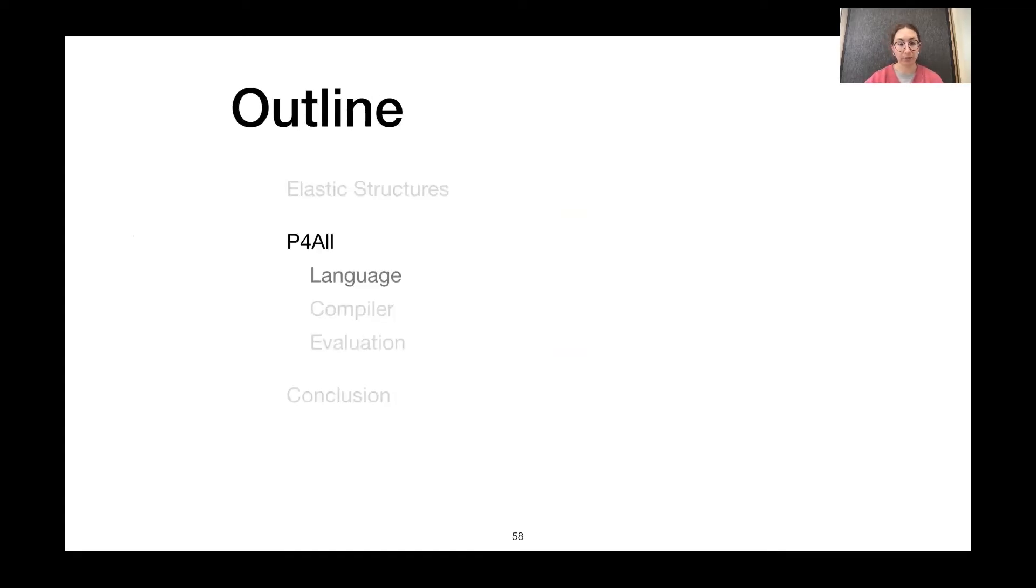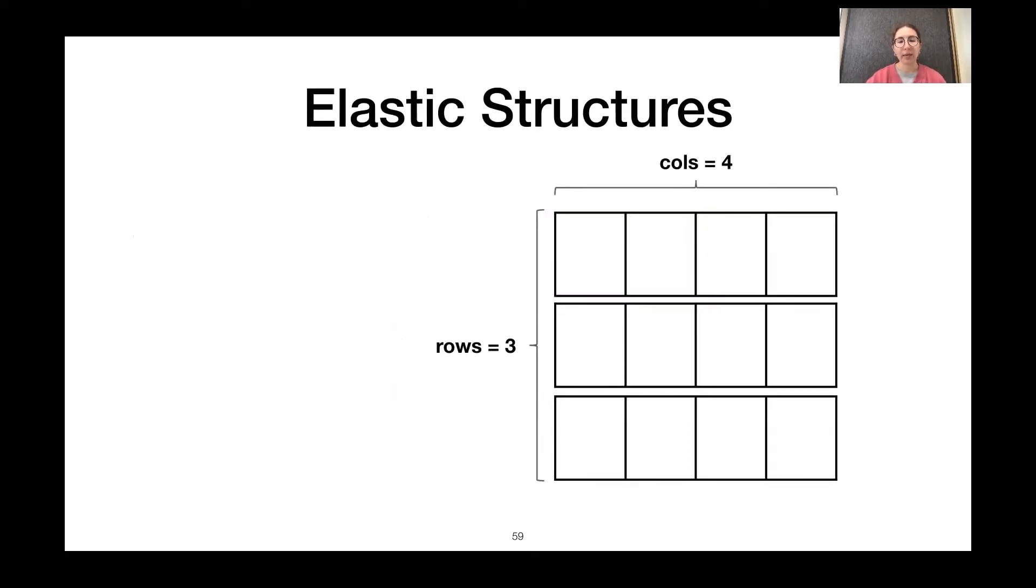So, how do we actually express these elastic data structures? So, we can't express them in the way that P4 currently exists. So, in P4, if we want to write a count sketch, we explicitly state we want three rows in our sketch, which correspond to our three register arrays. And each register array should contain four registers representing our columns.